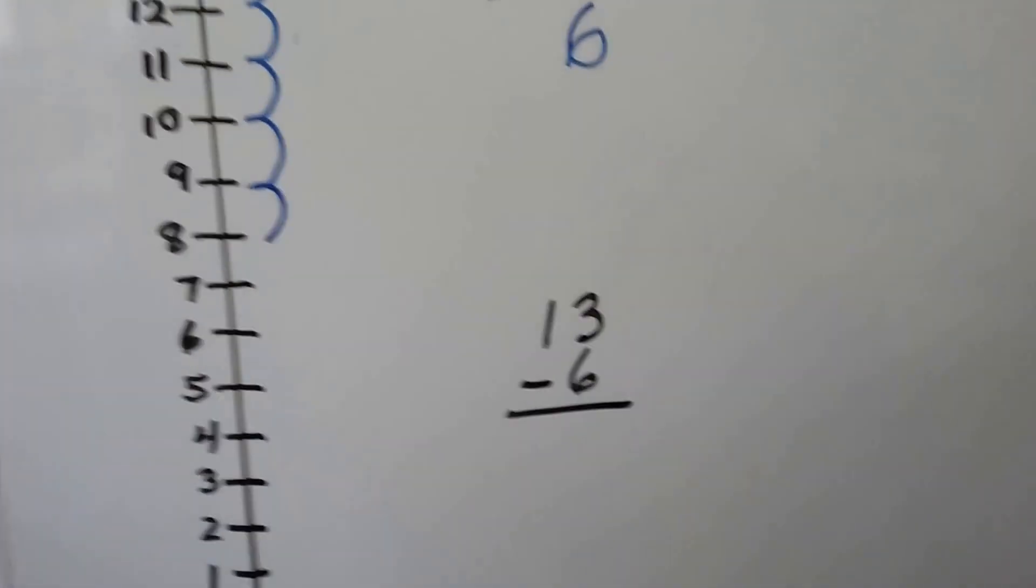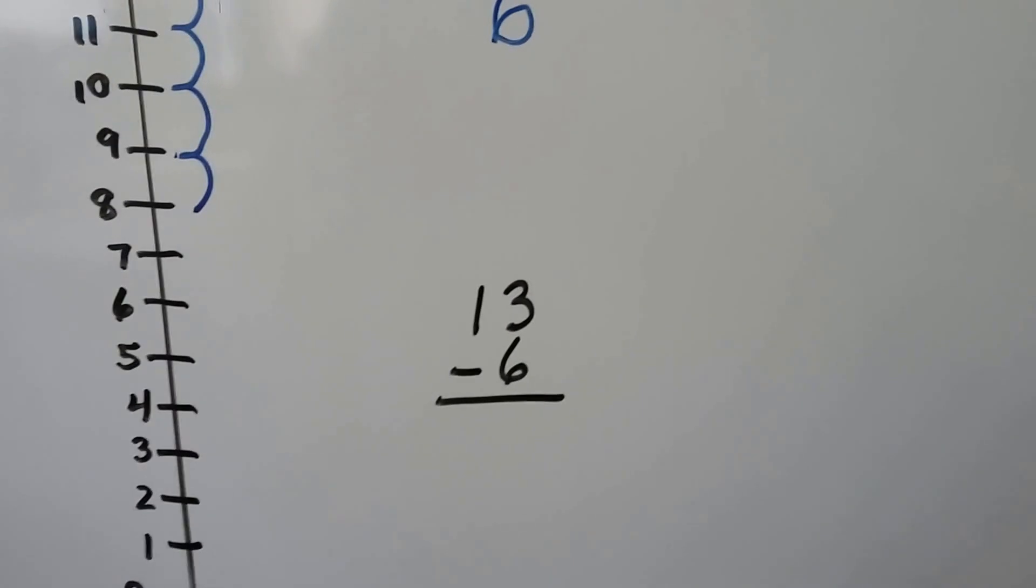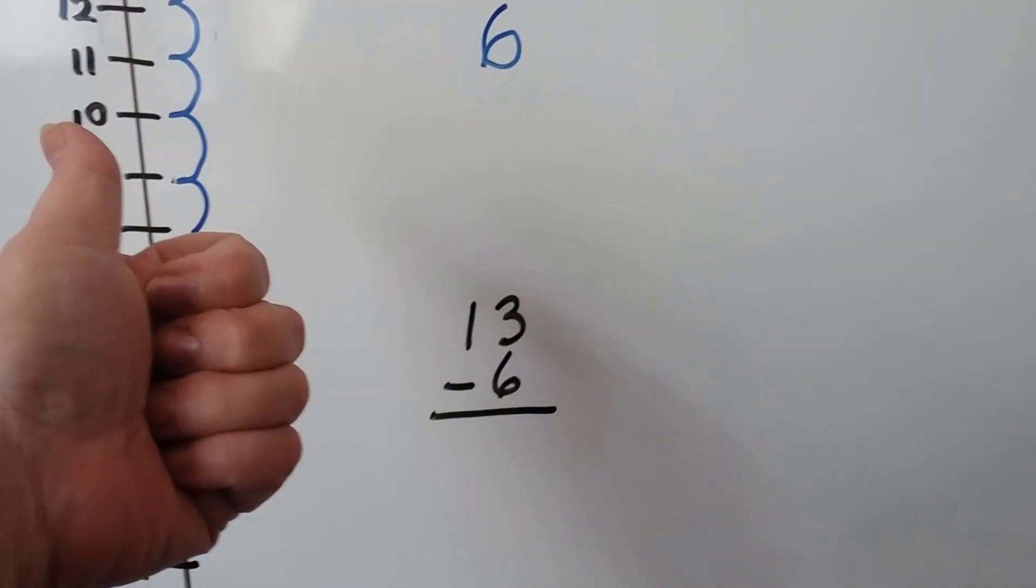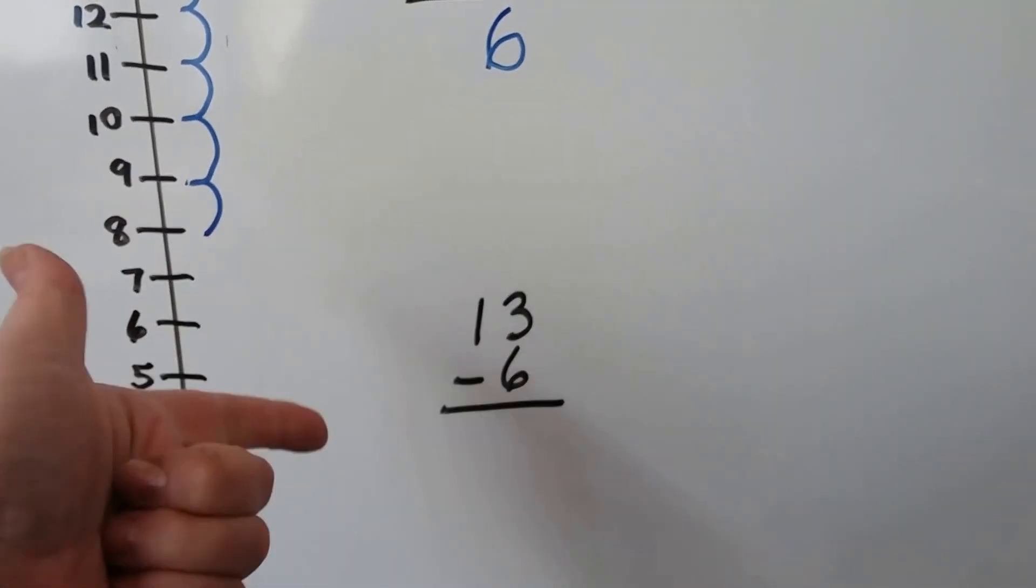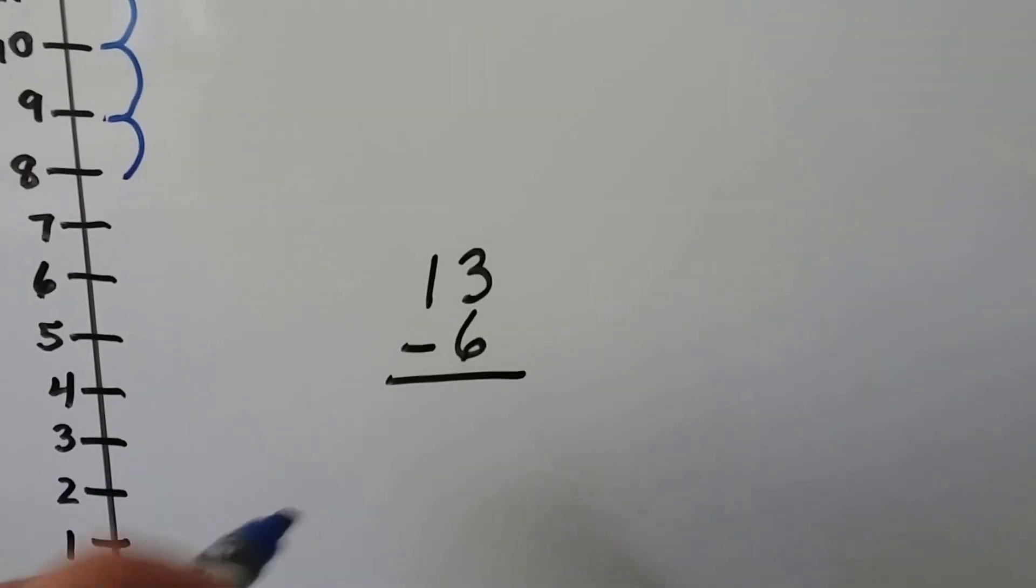We can even do it on our fingers. We have 13 minus 6. We start with 6 and count our fingers up to 13: 6, 7, 8, 9, 10, 11, 12, 13. That was 7 fingers, so 13 minus 6 is 7.